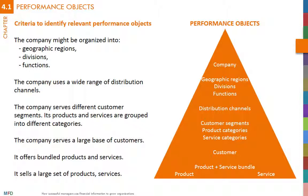For example, a vertically integrated firm may be interested in understanding the cost of manufacturing its products compared to acquiring them from an external supplier. In that case, the performance object is the manufacturing department.